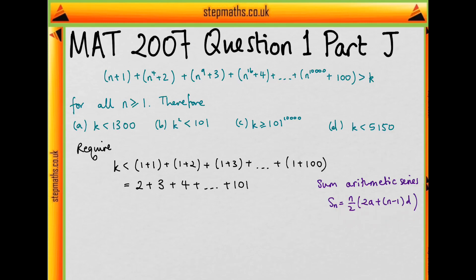And so our first term is going to be 2, so our a is 2. And we're going up by 1 each time, so d is 1. And we have 100 terms in this series, so n is going to be 100.